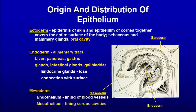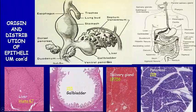The origin of the GI tract is largely the endoderm. That's where the main GI tract comes from — the liver, the pancreas, the gastric glands, the intestinal glands, the gallbladder. However, there is some contribution from the oral cavities from the ectoderm, and the mesoderm contributes to the mesothelium which lines the serous cavities, which is the outer layer of the gut and outer layer of the organs.